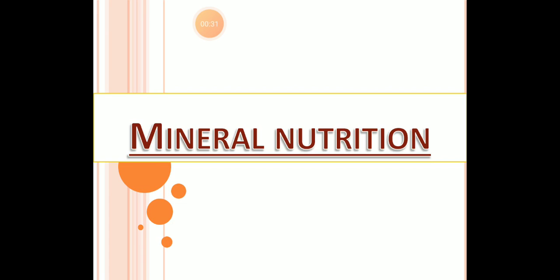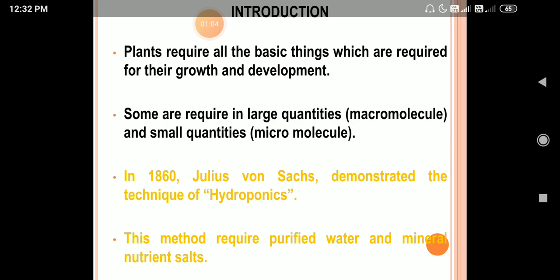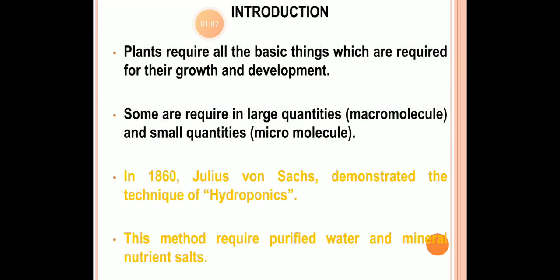Continuing with the second unit, the first chapter is mineral nutrition. Just like our body, plants also require nutrition. Just as we take various kinds of foods — regular daily foods, vegetables, or fruits — because we need nutrients for growth and development, plants also require various nutrients for their growth and development.